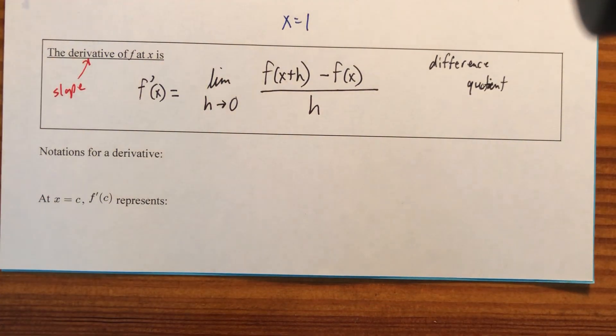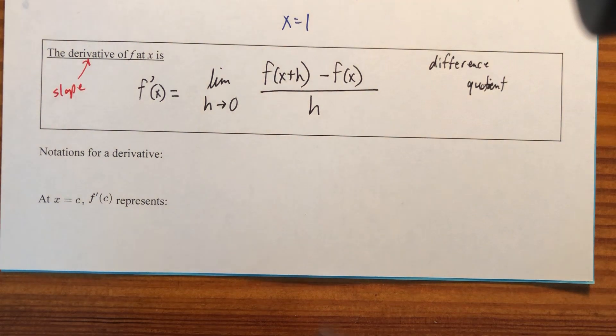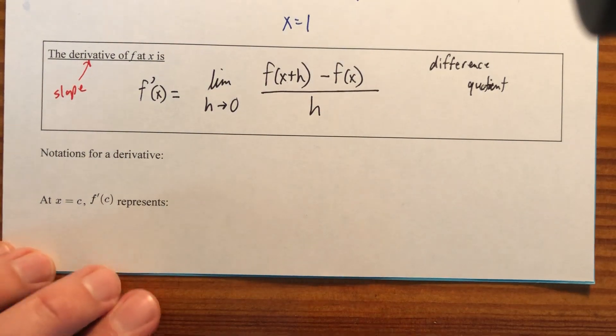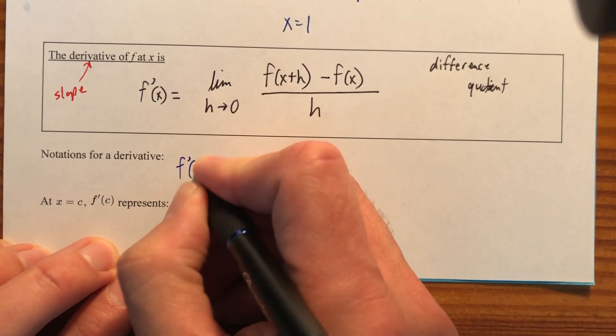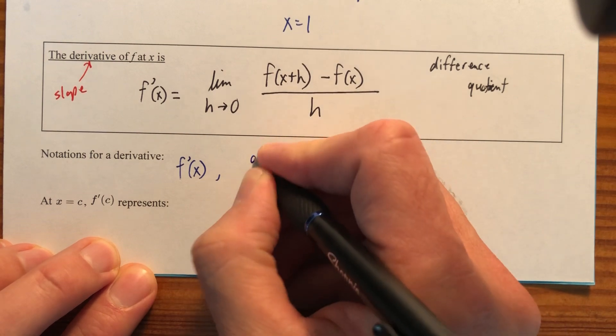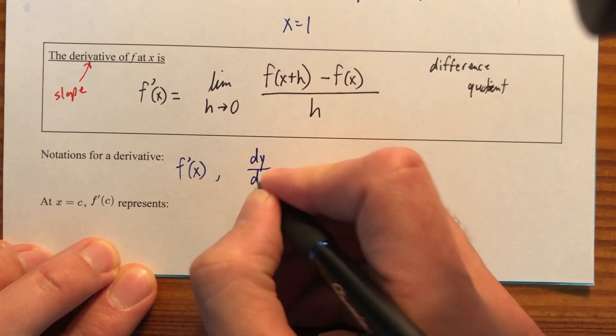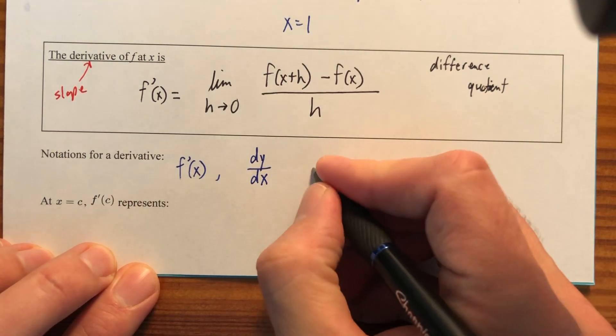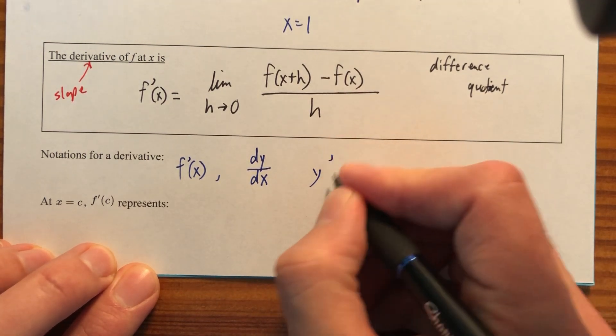So the notations for the derivative, there are several different notations. Let's write them in blue. I'm feeling blue right now. Not sad. I'm just feeling like writing with a blue color. Well, there's the one you just saw. There's also the change in y over the change in x, and we use d in that case. And then we also have y prime.